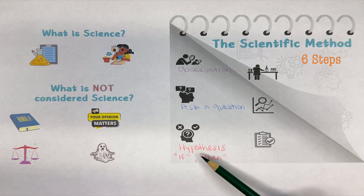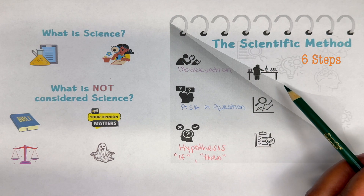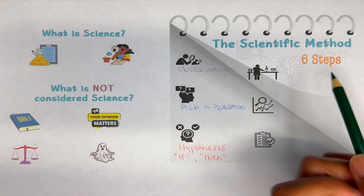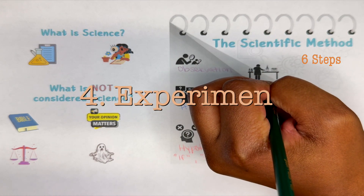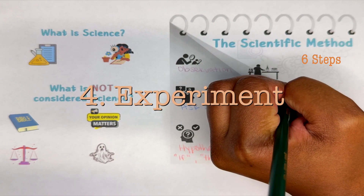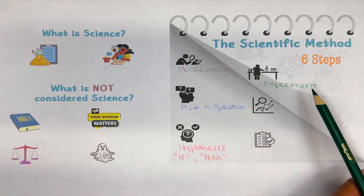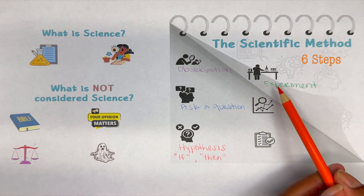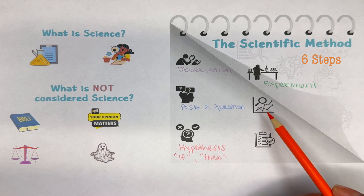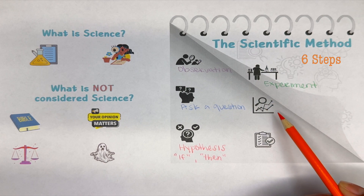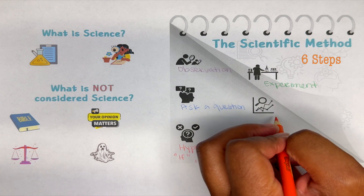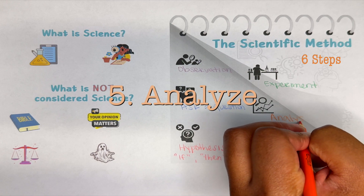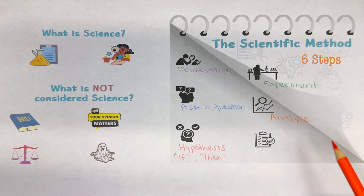After you've come up with your hypothesis, we're going to actually run a test — we're going to do an experiment on our hypothesis. After we run our experiment, we will then go ahead and analyze our results. You're going to look at the results from your experiment.